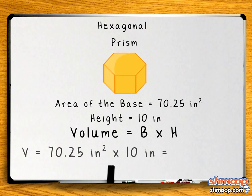Volume equals our base of 70.25 inches squared times the height of 10 inches, which equals 702.5 inches cubed.